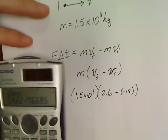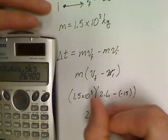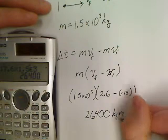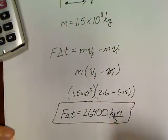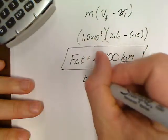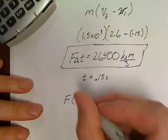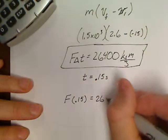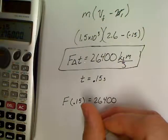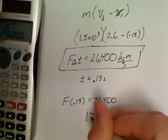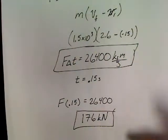So now all I've got to do is 1.5 times 10³ times (2.6 minus negative 15). This ends up 2.6 plus 15, so 17.6 times 1.5 times 10³. So this ends up 26,400 kgm/s. Now, this is the impulse. But it also asks us to find the force. It tells us that the time of the crash is 0.15 seconds. So force times ∆t equals 0.15 equals 26,400. So divided by 0.15 - 176 kilonewtons. So 176,000 newtons of force present in this problem.